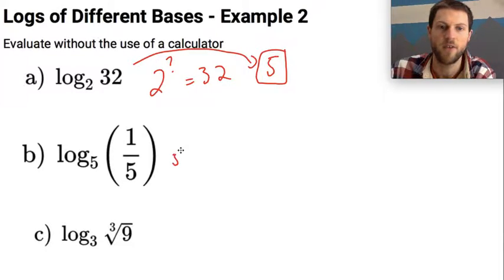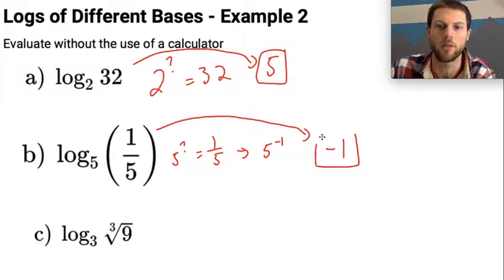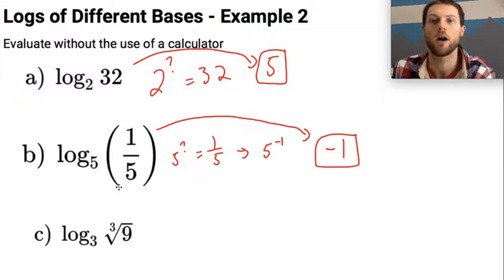I'm thinking in my head, 5 to the what power equals 1 fifth? And this might be helpful to think of 1 fifth as 5 to the negative first power, so that means that this log has to equal negative 1. So log base 5 of 1 fifth is equal to negative 1.